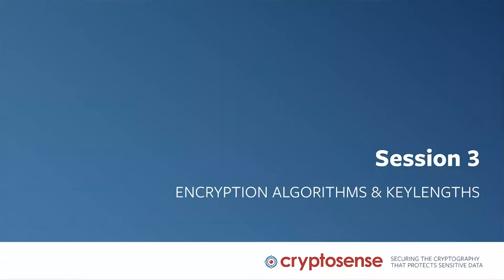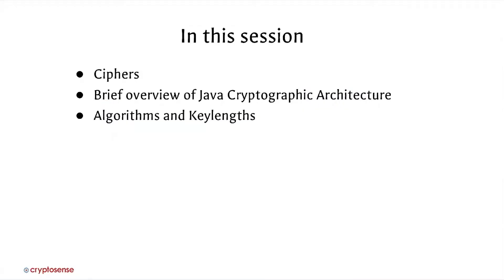Let's get started. With session three, we're going to be looking today at encryption algorithms and key lengths. We're going to look at what a cipher is, give a bit of an overview of how ciphers are used in the Java Cryptographic Architecture. We've picked Java because it's a very widely used programming language, and there's a lot of cryptography out there that uses the JCA, giving a good understanding of how it looks in practice when real code calls cryptographic algorithms.